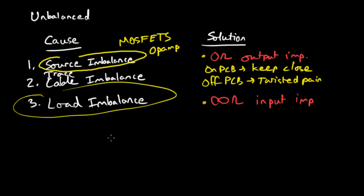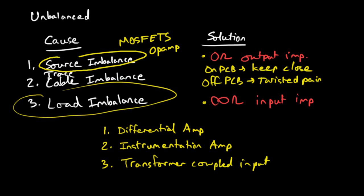There are lots of variations within each one, but there are basically three. There are one, the differential amplifier. Two, the instrumentation amplifier, which is basically the same thing as the differential amplifier with a slight tweak on it. And third, transformer coupled input, and I'm not going to cover that much here. Let me talk about these two.